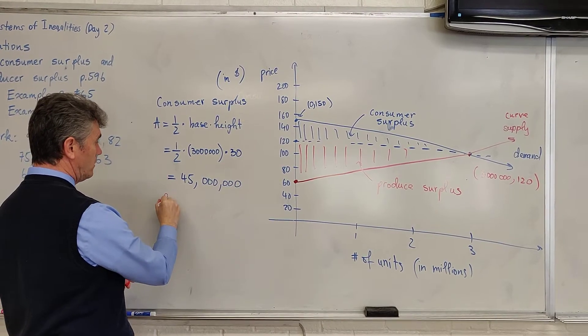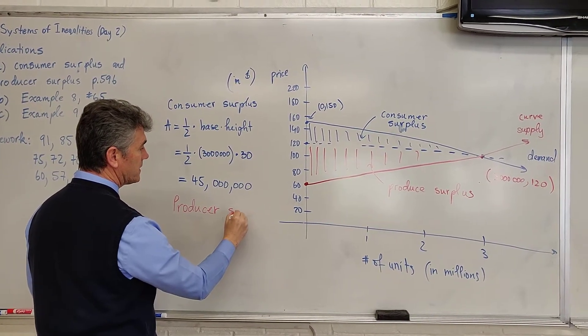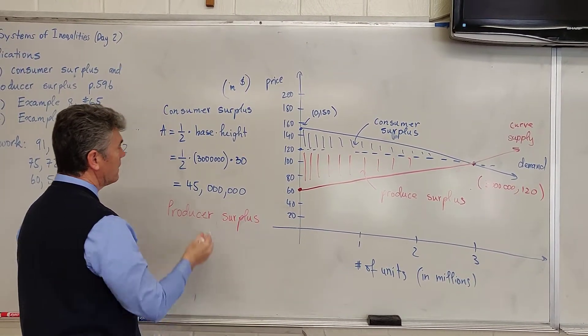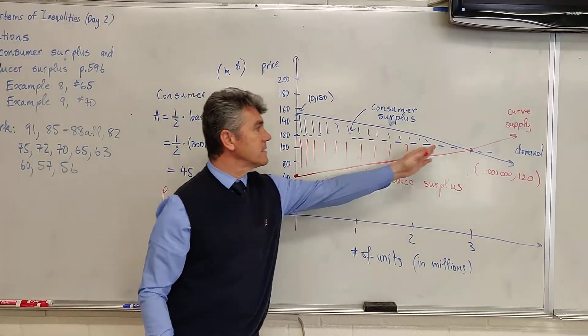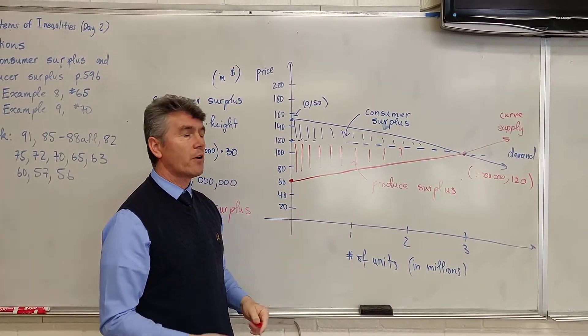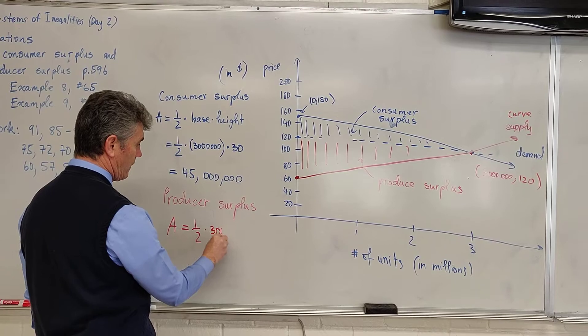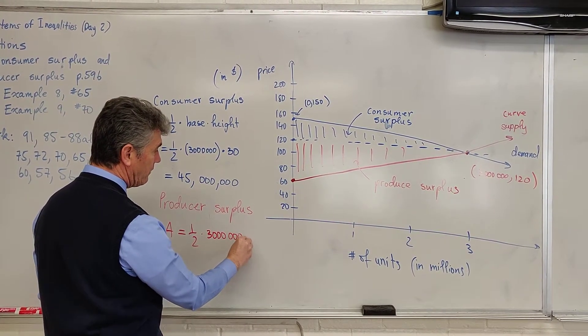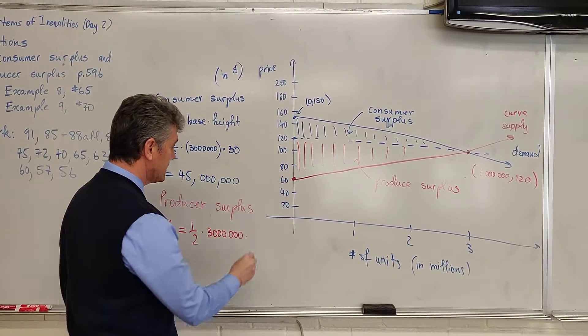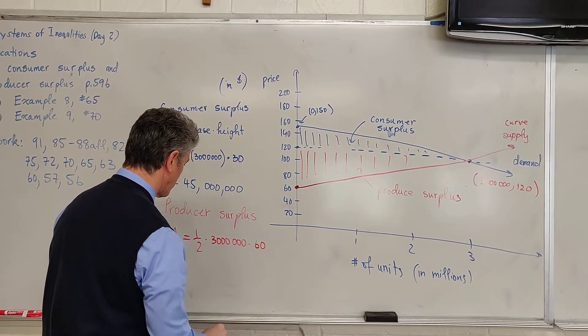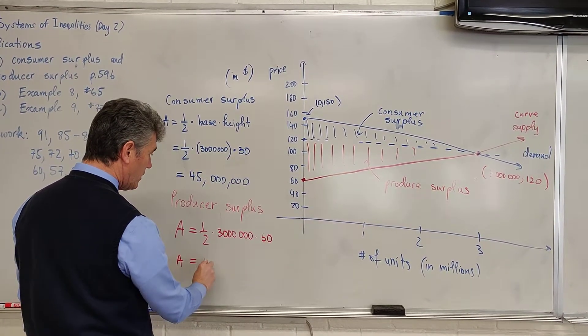What about the producer surplus? We do everything exactly the same. Producer surplus area is one-half times base times height. The base is still 3 million. The height is from (0, 60) to (0, 120), so the height is 60. This equals 90 million.